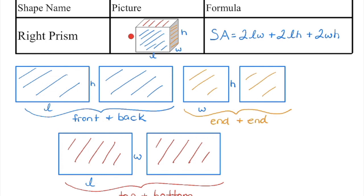Because the ends on this one are also rectangles, we have a rectangular prism. We could also have a triangular prism, a hexagonal prism — there are different types of prisms. But in each case, we need to find the area of all faces.